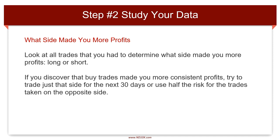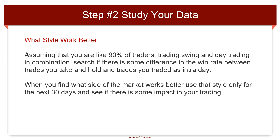What side made you more profits: look at all trades you had to determine what side made you more profits — long or short. If you discover that buy trades made you more consistent profits, try to trade just that side for the next 30 days, or use half the risk for trades taken on the opposite side.